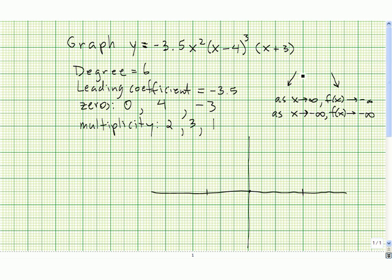Let's start using this end behavior. We know the graph goes down this way. The zero of negative 3 has a multiplicity of 1, so I know the graph is going to shoot just through this.